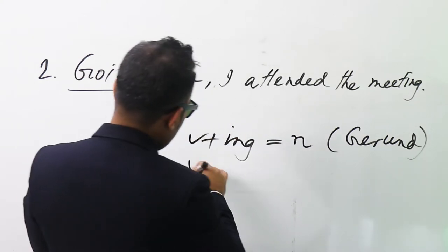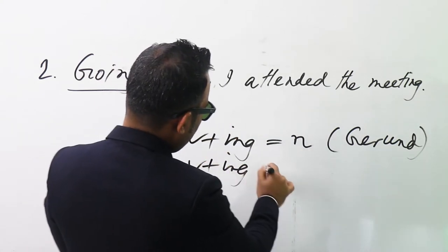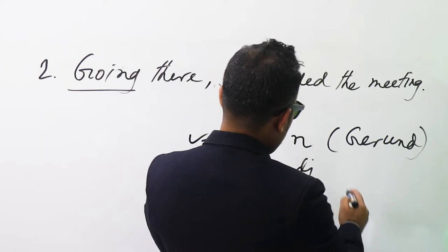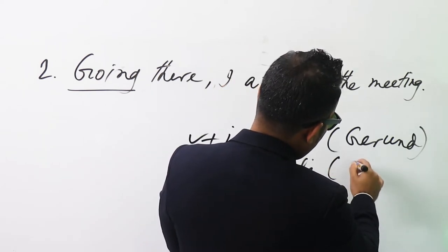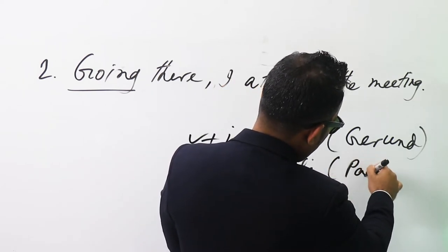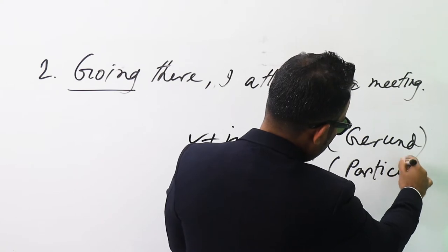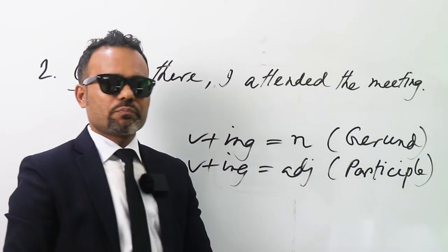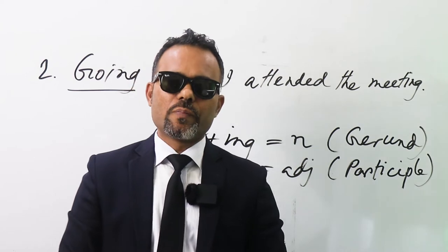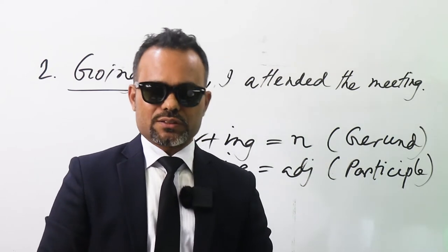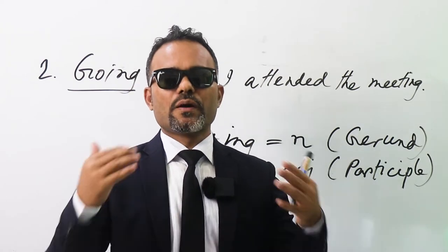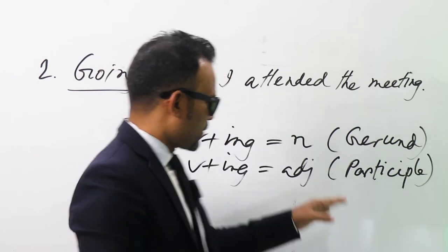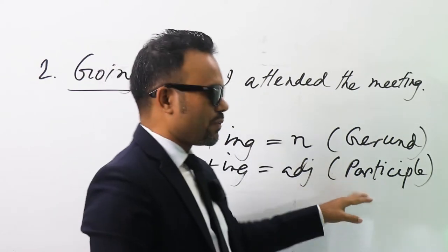And verb plus -ing, if it indicates an adjective, then it will be participle. What participle? Present participle. We have present participle, past participle, and perfect participle. So it will be present participle.